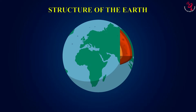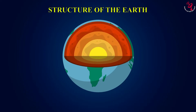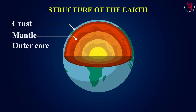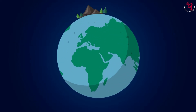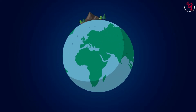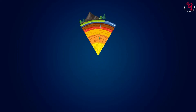Our Earth is made of four different layers. They are crust, mantle, outer core, and inner core. Each layer has its own unique physical and chemical properties. Let's dig into these layers.